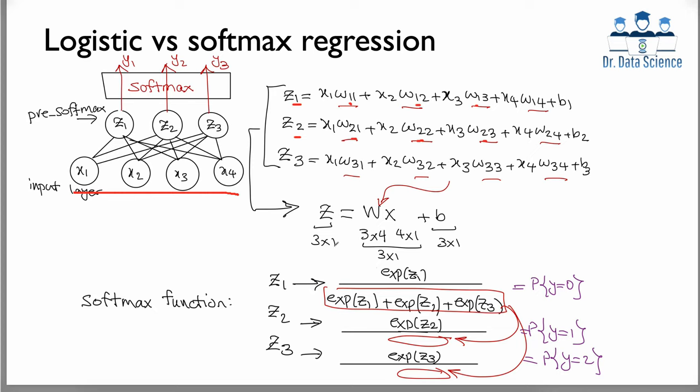Again, we have the same problem: these z values can be anywhere from negative infinity to positive infinity. To convert them to probabilities, we extend the sigmoid idea into the softmax function. The way it works is we take each output value, find its exponential, and then divide by the sum of all the exponentials.